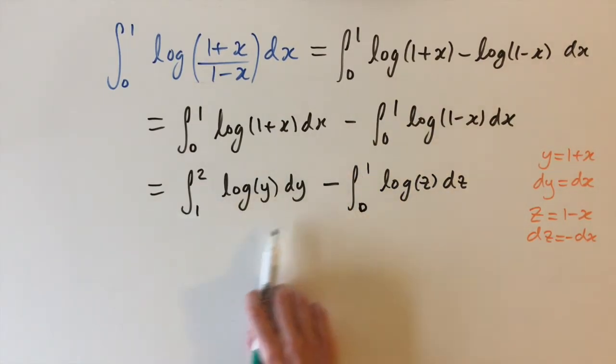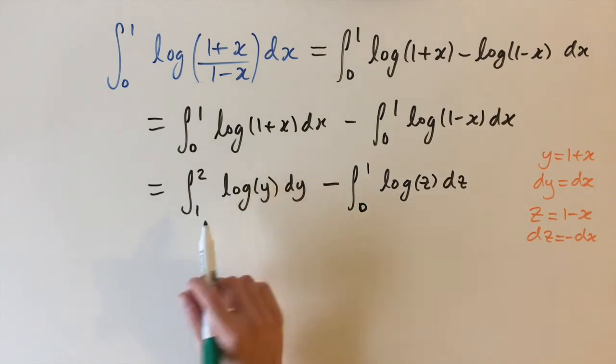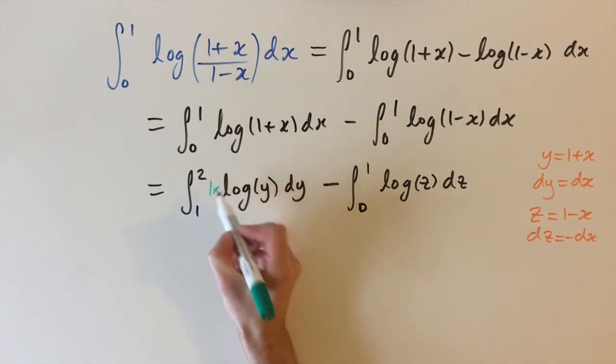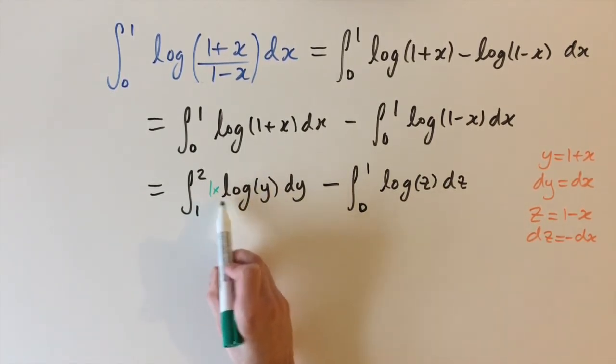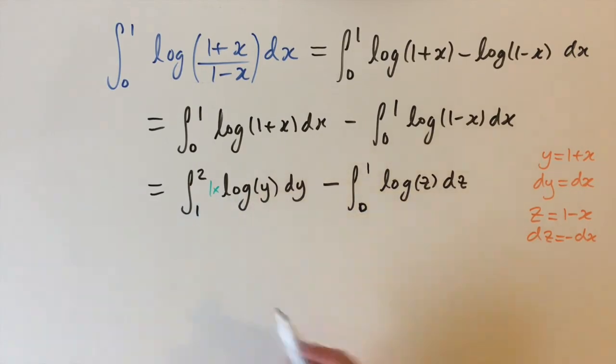So now we have the same integral twice with just different limits and we just need to integrate log of the variable which is y and z and we can do this using by parts. So you can imagine having a 1 and imagining 1 out the front so 1 times log of y and then we can differentiate log and we can integrate 1 and this is just going to give us polynomials which is nice.